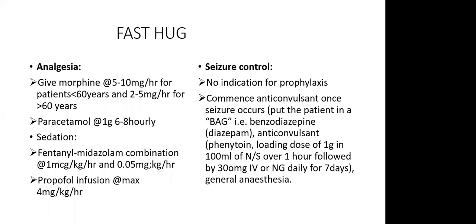Some patients may have seizures. The literature is not entirely clear on prophylactic anticonvulsants, and some studies show no better outcome with prophylaxis. However, you must commence anticonvulsants once a seizure occurs. The first line of management for seizure control is a benzodiazepine. Then give phenytoin — it is better advocated with a loading dose of 1 gram in 100 mL of normal saline over one hour, followed by 300 mg IV or via NG tube daily for seven days.